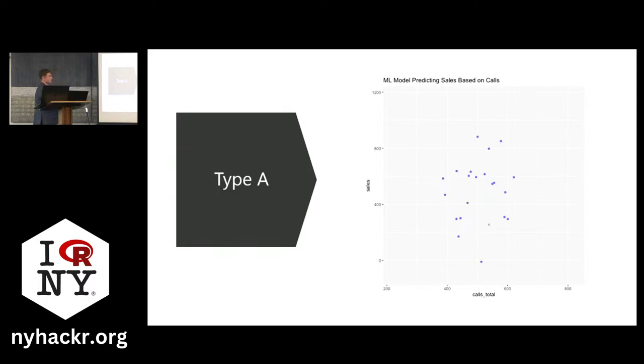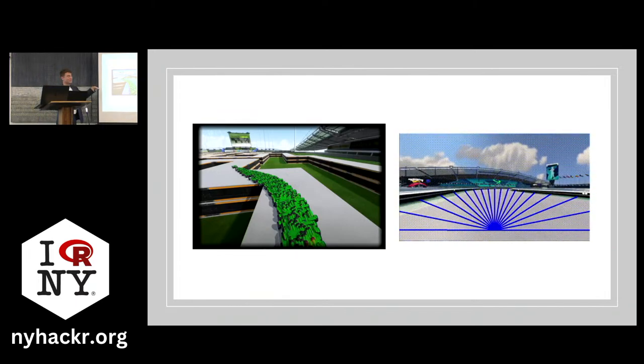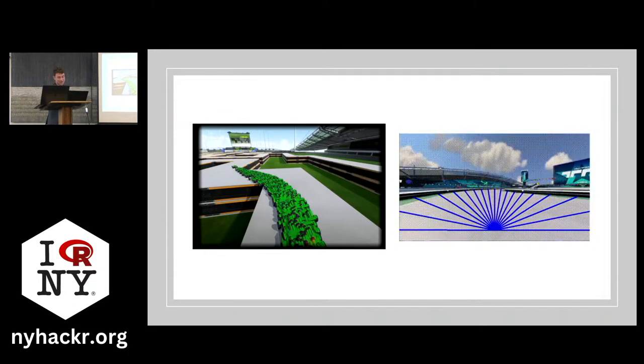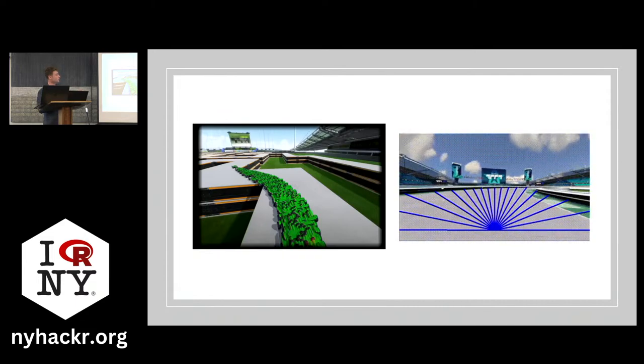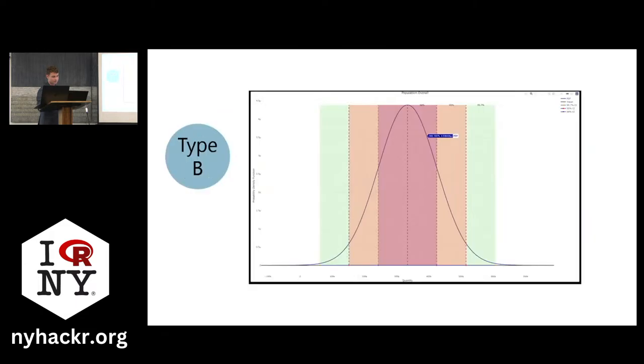Then if you guys have a data scientist, they'll send those up to your data scientist. So there's two types of data scientists. There's type A, which is a machine learning data scientist. Here's a pretty simple machine learning program that I've built and it's predicting the sales based on calls. So each dot represents a month. This shows a positive correlation between the number of calls made and sales. So a type A data scientist will work on this machine learning style. That's one type of data scientist. Then there's type B, which is the statistician style. That's more what I do.